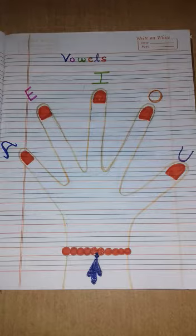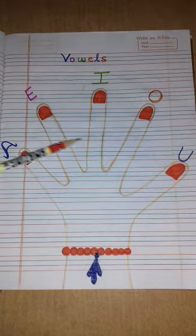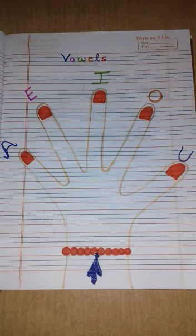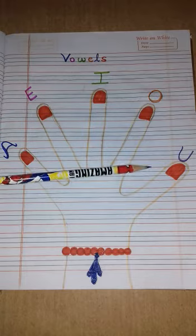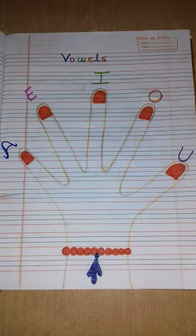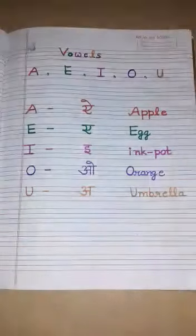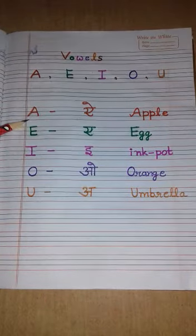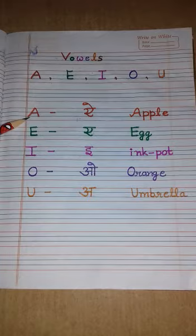There are 26 letters in the English alphabet, and five of them are vowels: one, two, three, four, five. The five vowels are A, E, I, O, and U. Our first vowel is A.